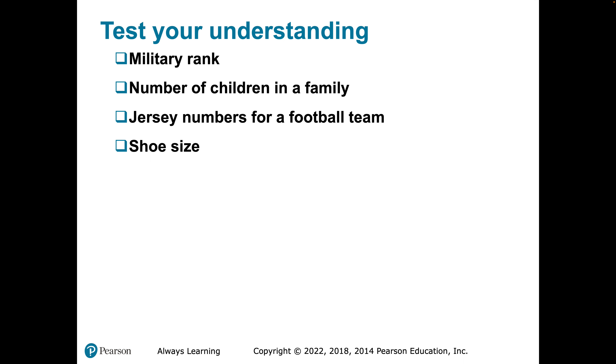One more test your understanding. Military rank is ordinal — it's categorical, but a general clearly outranks a private. Number of children in a family is ratio because zero actually means something: absence of children. Jersey number is completely nominal — no ordering, just a placeholder. Shoe size is interval: a shoe size of zero doesn't mean no foot or no shoe size; it's based on the scale of measurement.